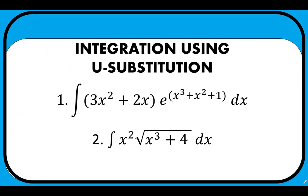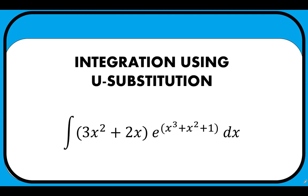Welcome back to our series on different integration techniques. This time let's talk about integration using u-substitution. Here are the two problems that we are going to solve in this video. Let's begin with the first one: find the antiderivative of the quantity (3x squared plus 2x) times e raised to (x cubed plus x squared plus 1) dx.